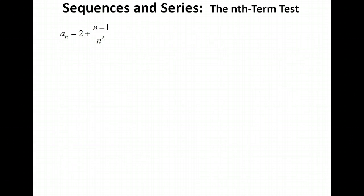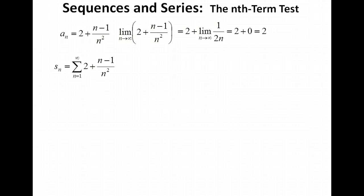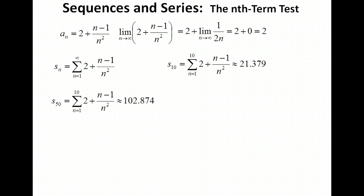Let's look at another example: 2 + (n − 1)/n². The limit of 2 is simply 2, and the limit of 1/(2n) goes to 0, so our limit is 2. Looking at the series — the sum of the first 10 terms is around 21, the first 50 terms gives about 103, and the first 100 terms gives about 203. So this is definitely going off to infinity. Again, the sequence converged but the series diverges.